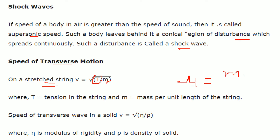The speed of transverse wave in a solid is given by V = √(η/ρ), where η (eta) is the modulus of rigidity and ρ is the density of the solid.